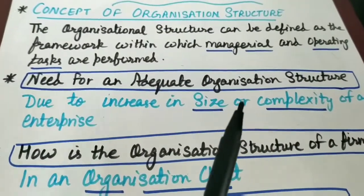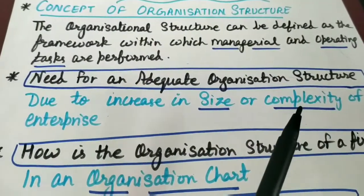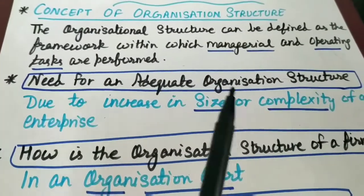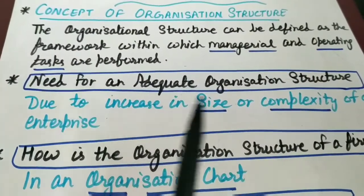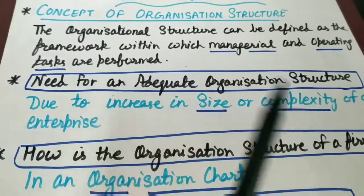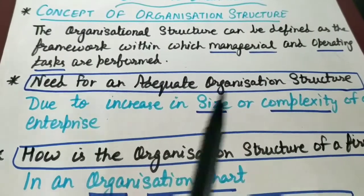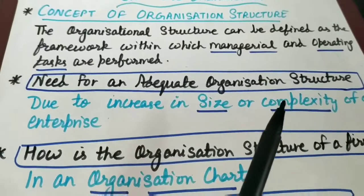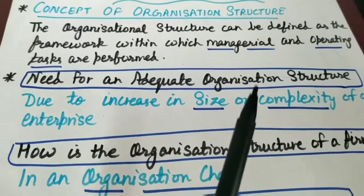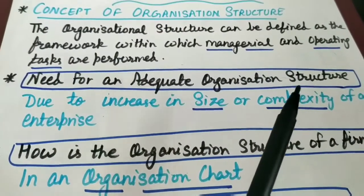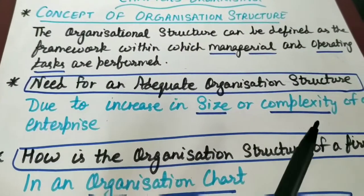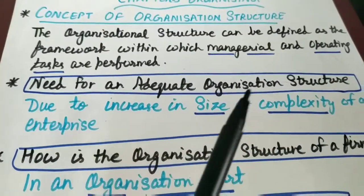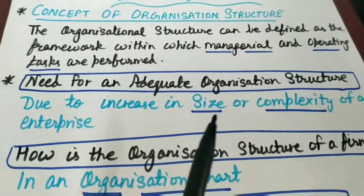Jab ek adequate structure organization ka hoga, toh uske humari kaafi benefits hain. Pehla benefit hai ki it specifies the relationship between people, work and resources. Yaani ki jo bhi log kaam kar rahe hain, jo bhi activities hum perform kar rahe hain, jo bhi humari resources hain — physical resources, human resources, etc. — in resources ke beech mein ek relationship create hota hai, which is being specified with the help of this organization structure.